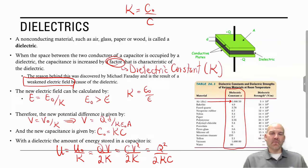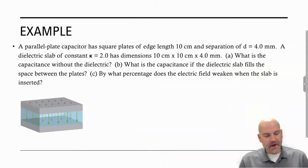Let's look at an example where we compare a capacitor with what we label here as a dielectric. Here we have a parallel plate capacitor with square plates of edge 10 centimeters and separated by 4 millimeters. Then we have a dielectric slab of constant k equal to 2.0 and having dimensions of 10 by 10 by 4. So what is the capacitance without the dielectric? What is the capacitance if the dielectric slab fills the space between the plates? And by what percentage does the electric field weaken when the slab is inserted?